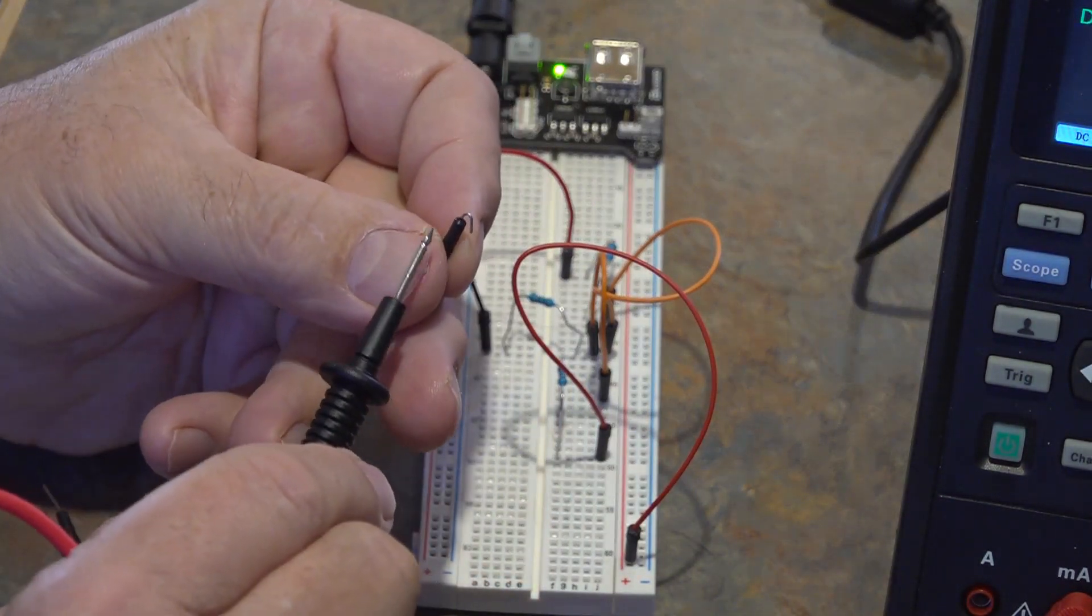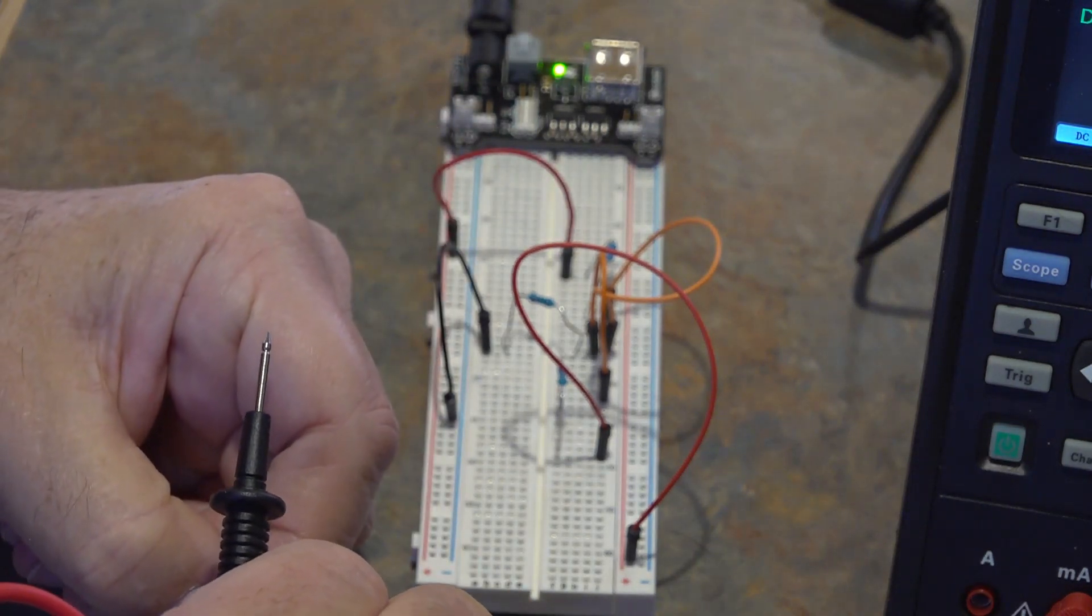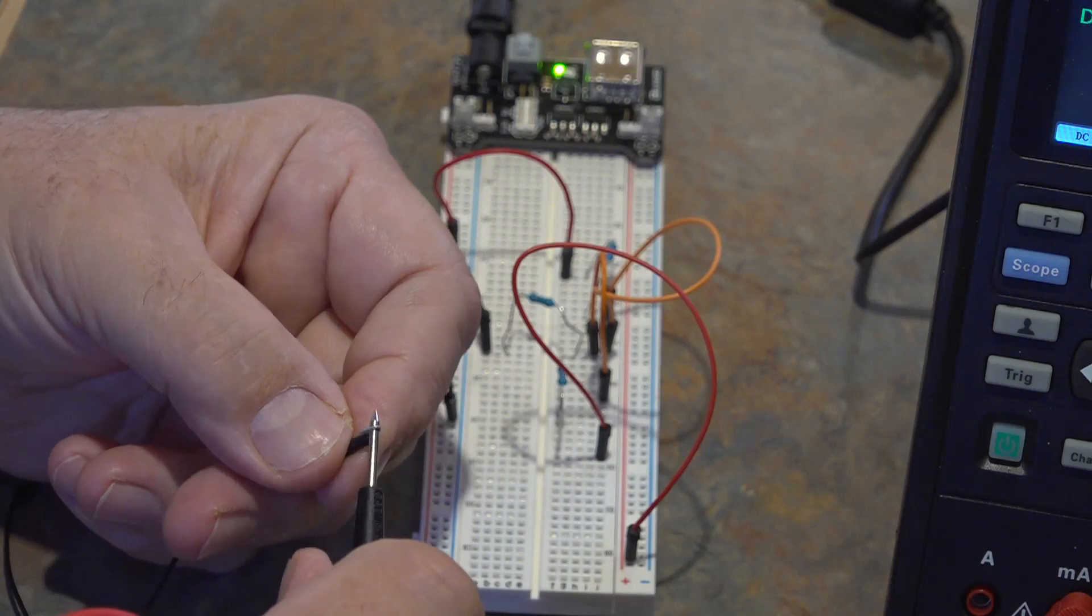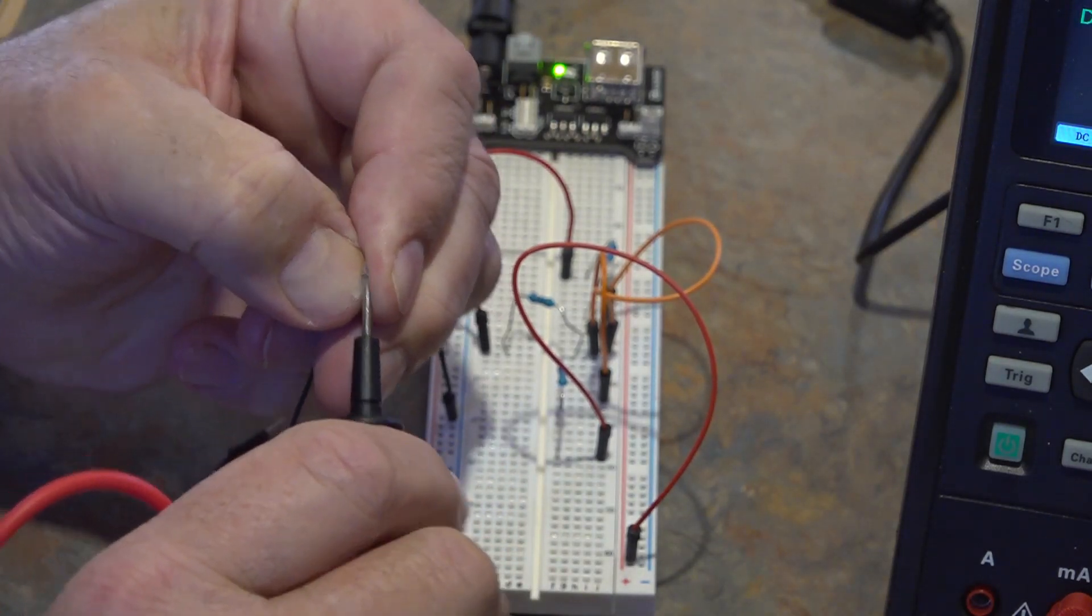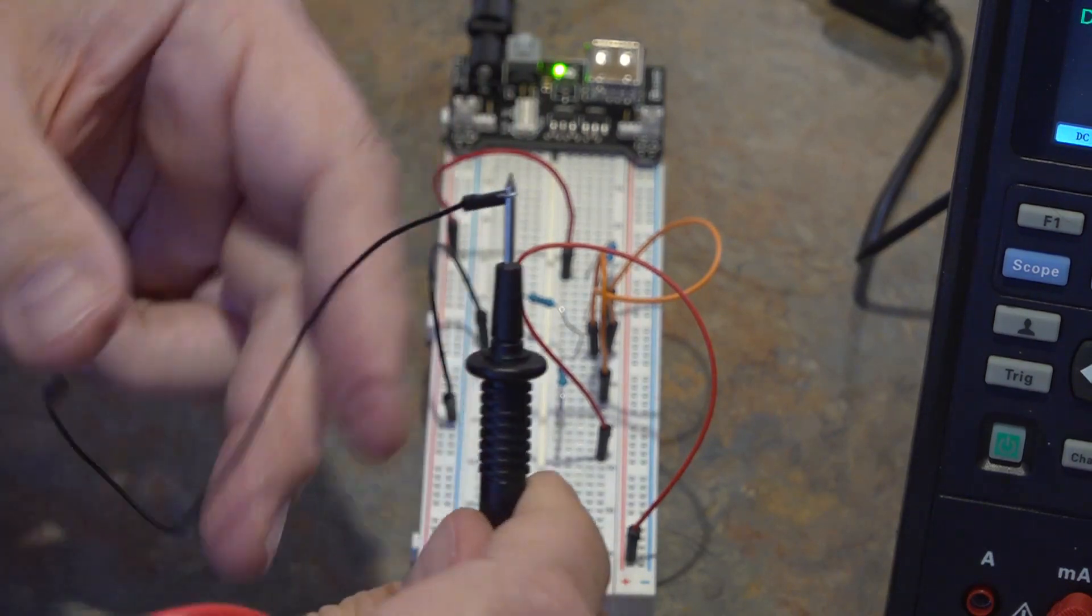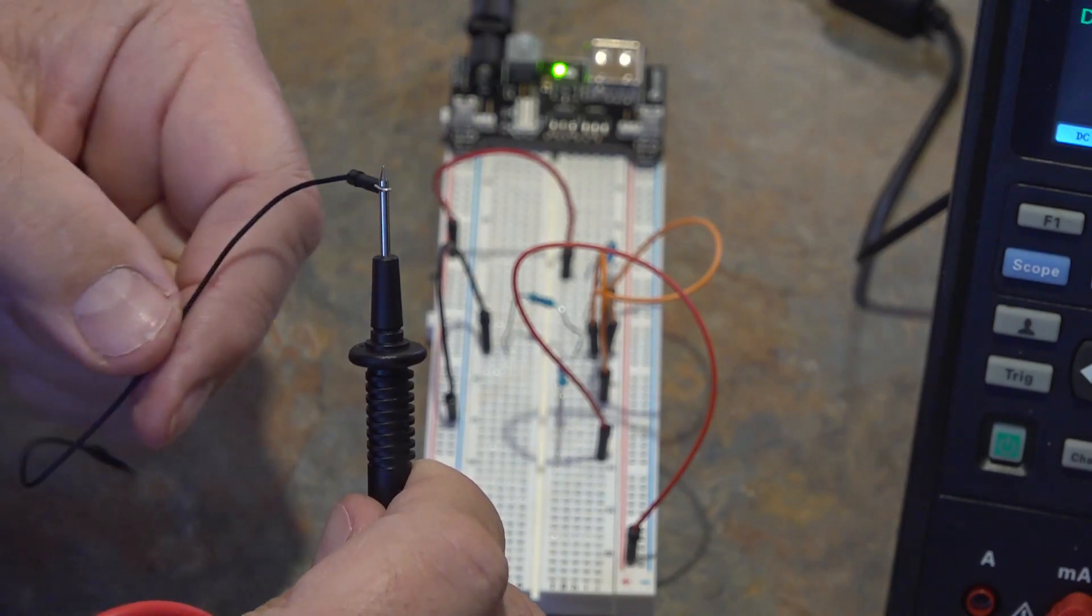If you look here you can see I just bent it over and then it snaps onto the end of the probe where that little notch is in the probe. So this now gives me a free hand.